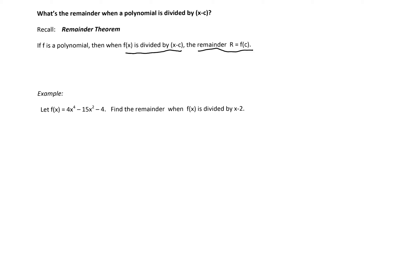So if my f of x is 4x to the fourth minus 15x squared minus 4 and I want the remainder when f of x is divided by x minus 2, I simply have to compute the value of function at 2 because my c in this case is 2. c is equal 2 here.